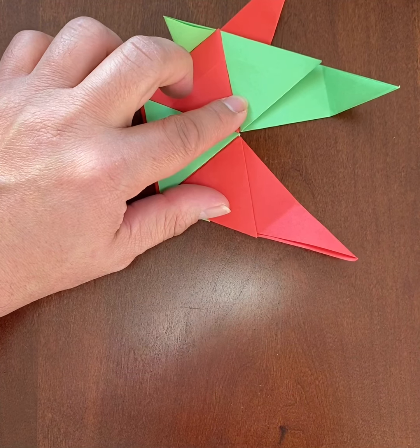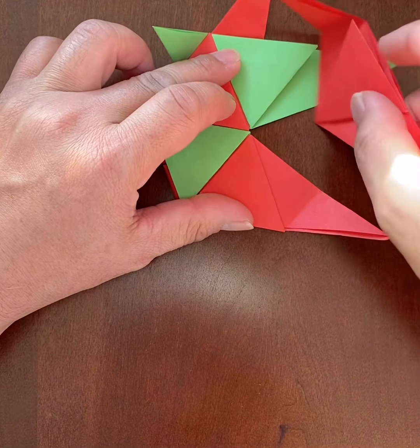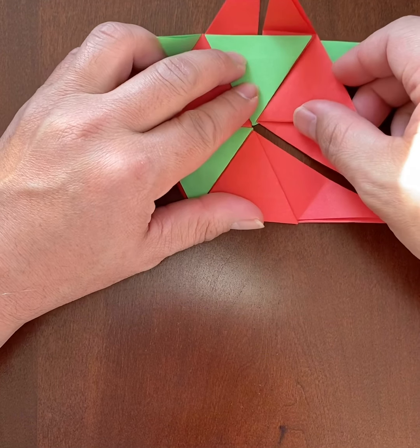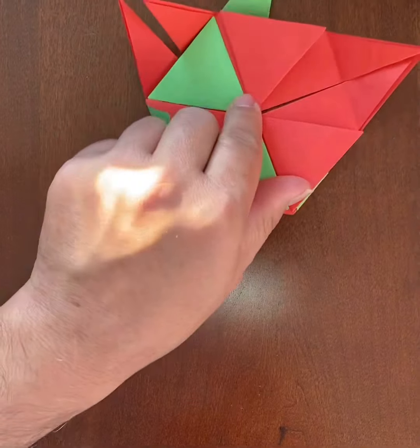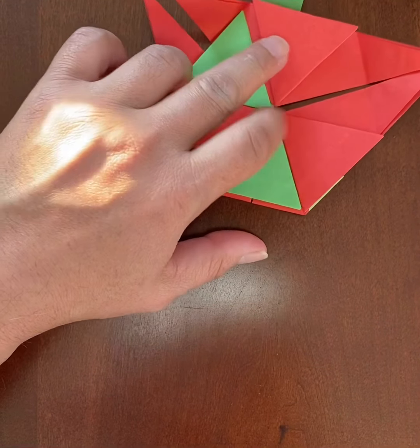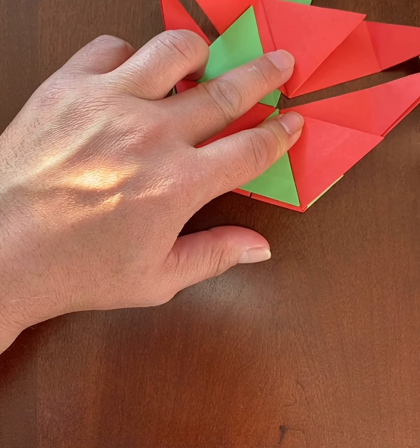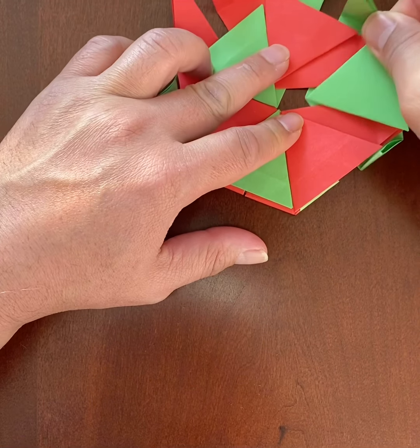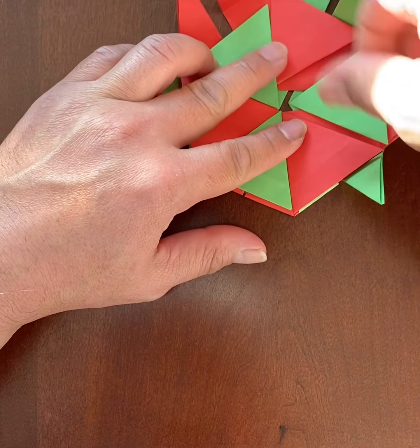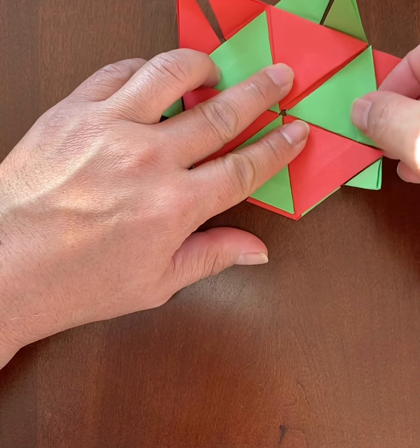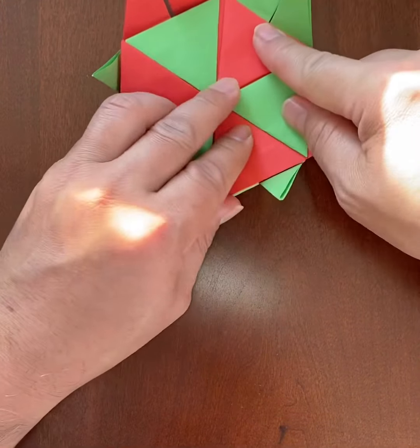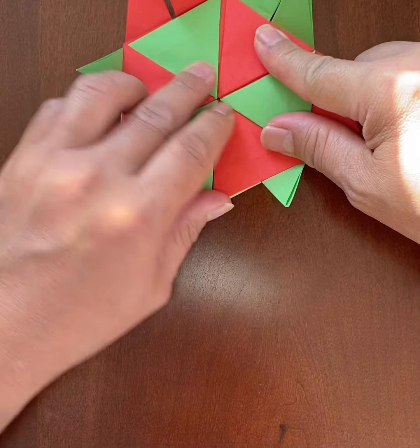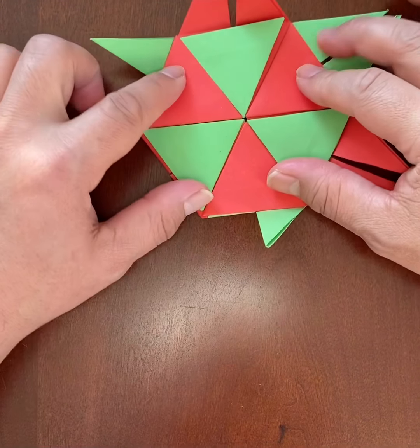Do the tucks. My next red module here, do the tucks. And finally, my last green module will slide right in there. And after I tuck all these flaps inside the triangular pockets, then my project will be complete.